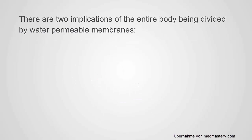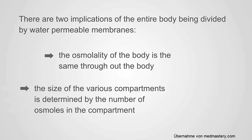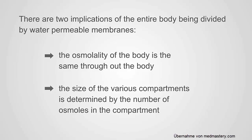There are two implications of the entire body being divided by water-permeable membranes. One: the osmolality of the body is the same throughout. And two: the size of the various compartments is determined by the number of osmols in that compartment.